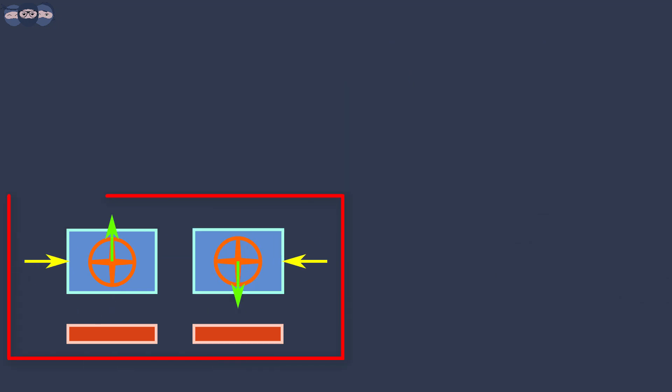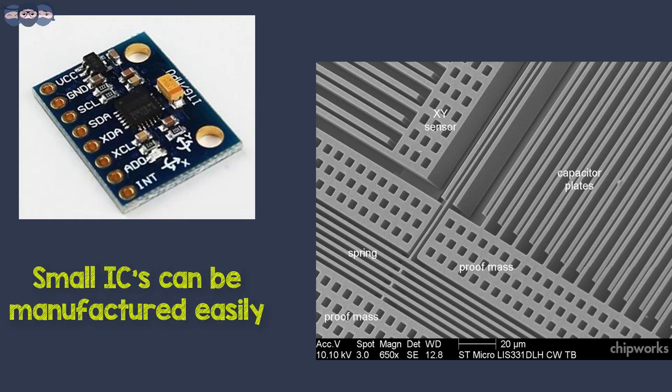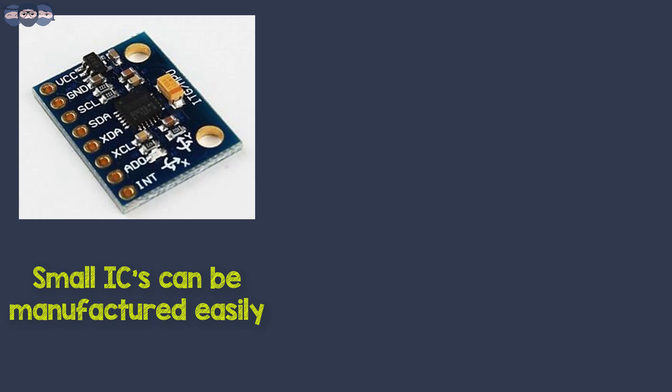This whole assembly is built as MEMS of the scale of micrometer. This makes it possible to manufacture small ICs for gyroscopes. Having such systems placed in all the three axes helps to find the angular velocity in x, y, and z direction.